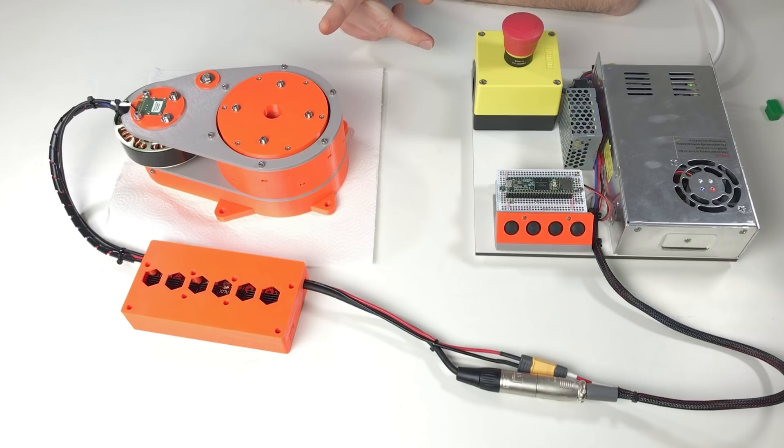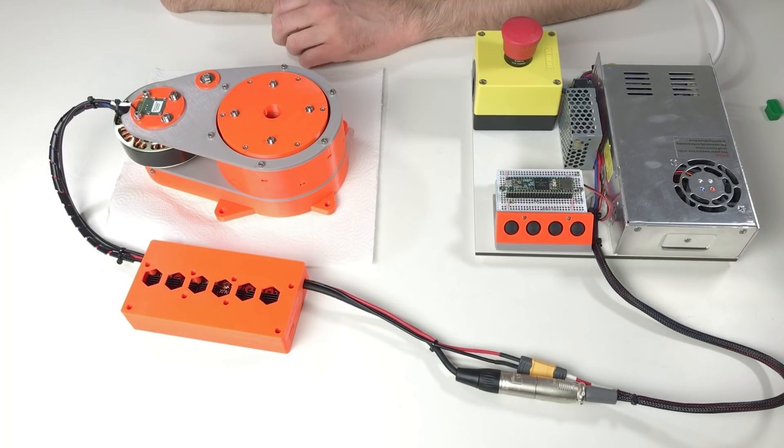This is the motor calibration. Encoder calibration. Rotates to one direction. And stops. This means that there is a problem. Ha! Now I need to find out where is the problem.